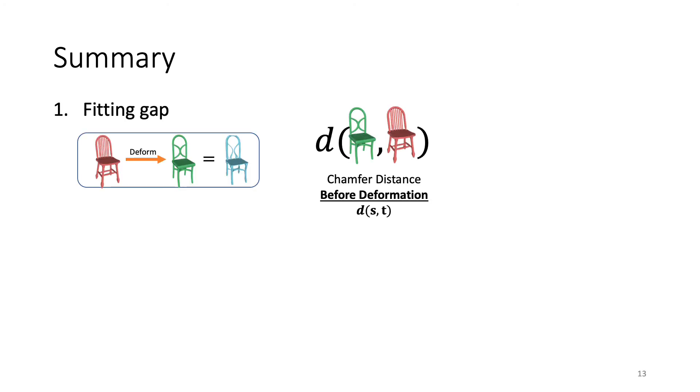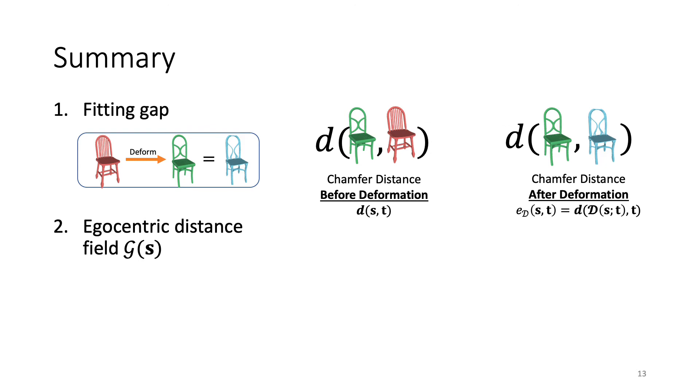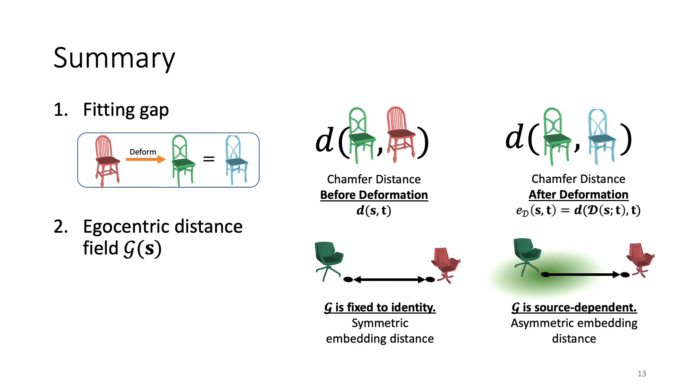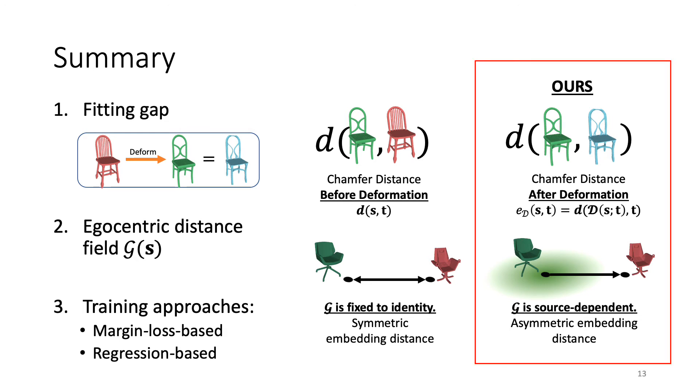Summarizing our contributions, first we introduce fitting gaps. Instead of taking chamfer distance between source shape S and target T, we take the chamfer distance between deformed S and T, to learn our embedding. Second is the egocentric distance field G. Instead of using a symmetric Euclidean distance, where G is fixed to the identity matrix, we learn the egocentric distance field G to be source-dependent, making the embedding distance asymmetric. Finally, we propose two training approaches, namely the margin-loss-based approach and our regression-based approach to train our network. We show in our experiments that these contributions are essential in learning our deformation-aware embedding space.